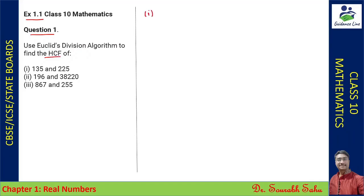We have been given 135 and 225. Now, as we know for Euclid's division algorithm, we have to select a and b in such a way that a is always greater than b. So here a will be 225 and b will be 135.